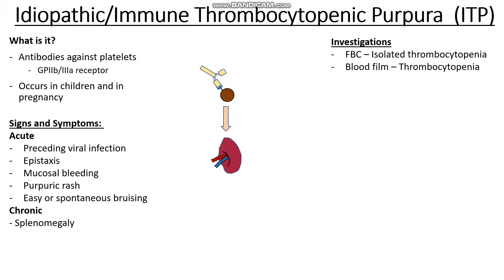Next we want to make sure this is a true thrombocytopenia by doing a blood film, where we see fewer platelets. We also want to make sure there's nothing wrong with the signal telling our bone marrow to make platelets — we do this by checking liver function tests. One thing associated with any immune disease is thyroid dysfunction, since causes of hyper- and hypothyroidism tend to be autoimmune in nature, so we should rule them out using thyroid function tests.